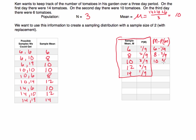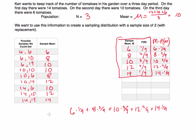Continuing: plus twelve times two-ninths, plus fourteen times one-ninth. This gives us the expected value — the expectation for the random variable m, which is the mean of the means. If you put that in your calculator, you get ten.